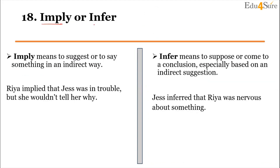Next, 'imply' or 'infer'. Imply means to suggest or say something in an indirect way. For example: 'Rhea implied that Jess was in trouble, but she wouldn't tell her why' — she hinted that she was in trouble without saying it directly. Imply is a verb meaning to hint at something, and it is done by the speaker — the person who is talking is implying. For example: 'Are you implying that I lied?'